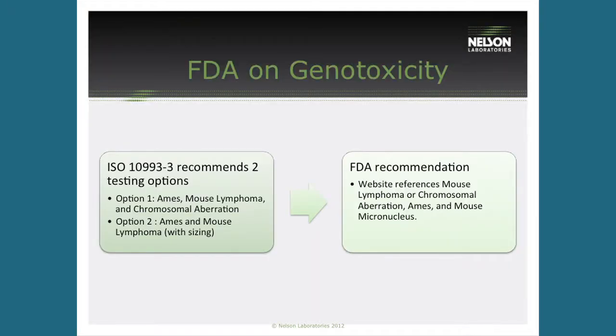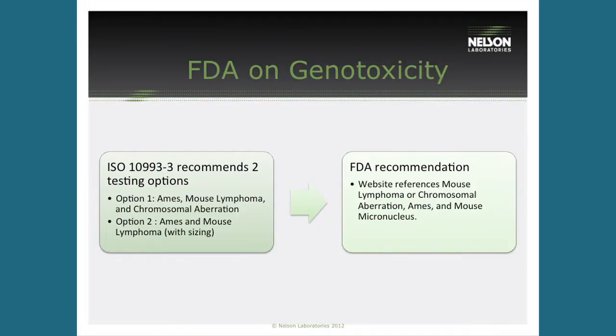Right now as ISO 10993 stands, we have two options. The first option allows us to do an Ames test, a mouse lymphoma, and then the chromosome aberration test — those three in vitro tests can be run according to ISO 10993-3 to evaluate genotoxicity. There's a second option that allows us to do the Ames and then the mouse lymphoma, and then size the mouse lymphoma colonies. By sizing those colonies we can evaluate the chromosomal damage, which allows us to replace the chromosome aberration test.